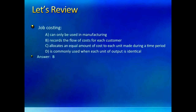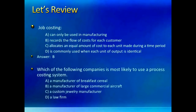The second problem wants you to pick the most likely candidate for process costing. A is a mass production option of identical goods. All others are examples of job costing, so the correct answer is A.